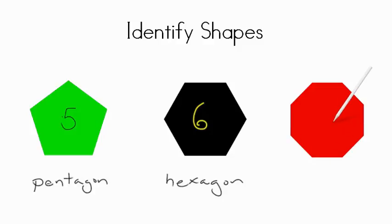Finally, here we have an eight-sided shape. An eight-sided shape, you can think of like a stop sign, is called an octagon. You hear the word oct, like an octopus has eight arms. So pentagon, hexagon, octagon.